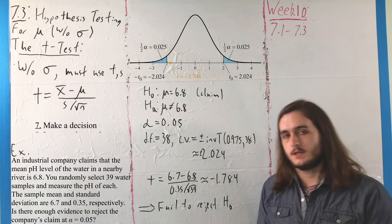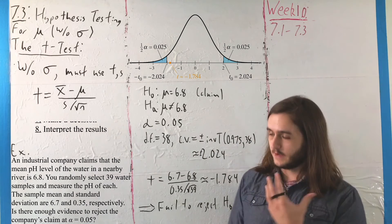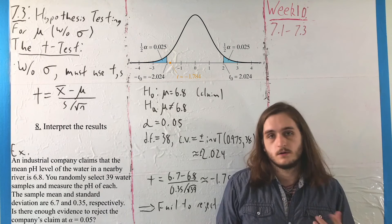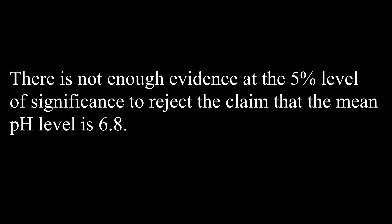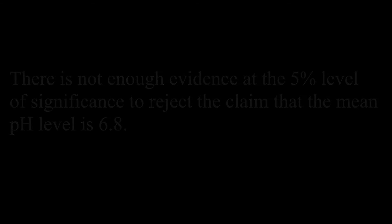That is, if you want to think about this in terms of our conclusion, our interpretation, we could say that there is not enough evidence to reject the claim that the mean pH level is 6.8 for alpha equals 5%.